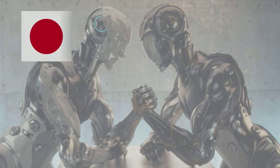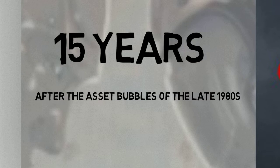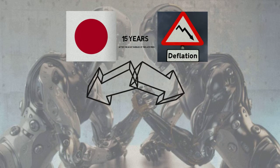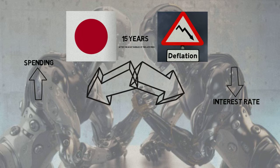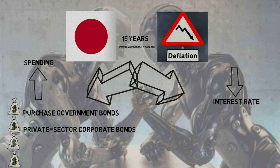Here we shall consider a second example. Since the early 90s, Japan has fought a continuing battle with deflation for more than 15 years. This occurred due to a major collapse of the asset bubbles of the late 1980s. In its attempt to recover from this slowdown, Japan has continued to use very lenient economic policy such as increasing spending, as well as extreme easy monetary policy with very low interest rates on savings, to encourage spending instead of saving. Under this policy, the Bank of Japan has purchased Japanese government bonds, private sector corporate bonds and commercial paper to increase the supply of money in the system.